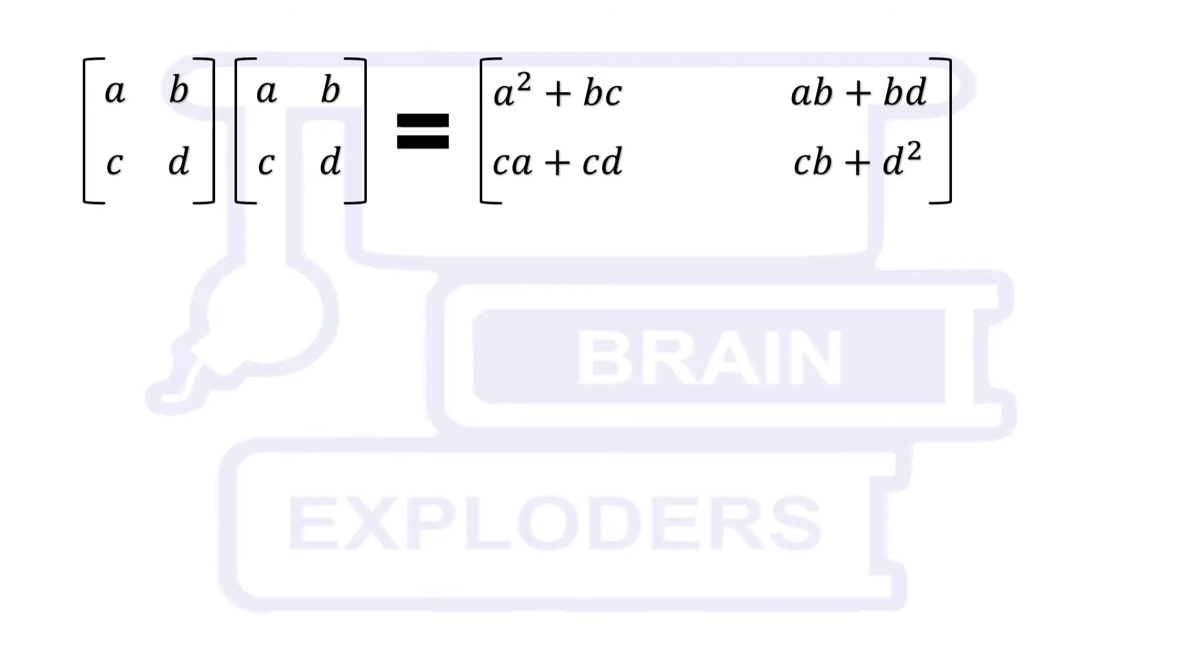We need this matrix to be equal to both written on the left hand side. On comparison, A² plus BC is equal to A, AB plus BD is equal to B, CA plus CD is equal to C, and CB plus D² is equal to D.